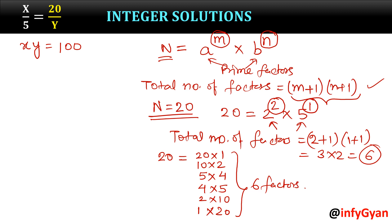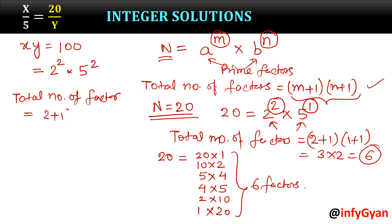Now let us find out the factors of 100. We can write 100 as 25 times 4, so 2 raised to the power 2 and 5 raised to the power 2. Total number of factors: (2+1) times (2+1), that means 3 times 3, so 9 factors are there in total.